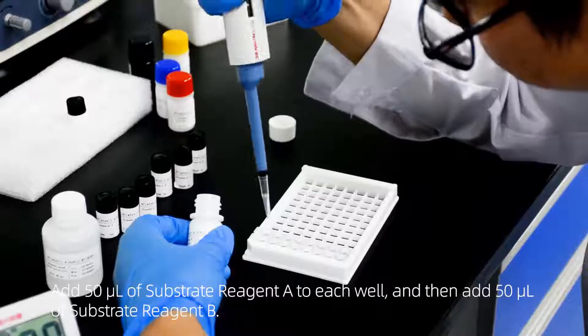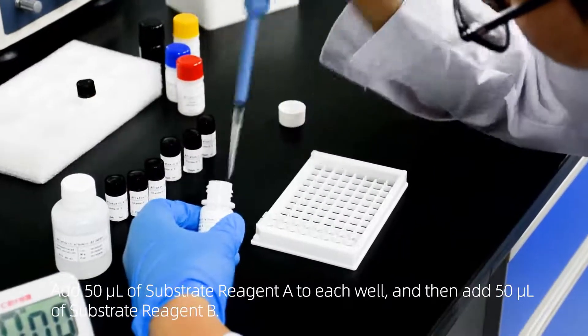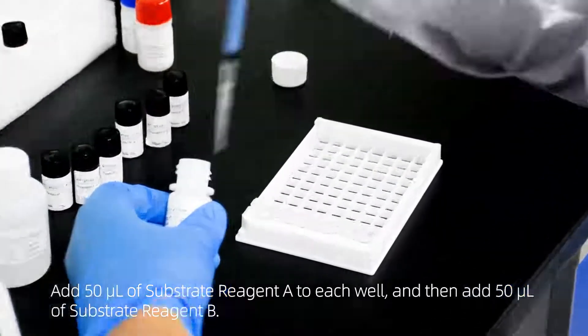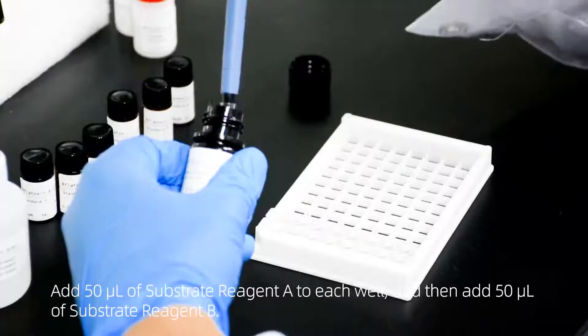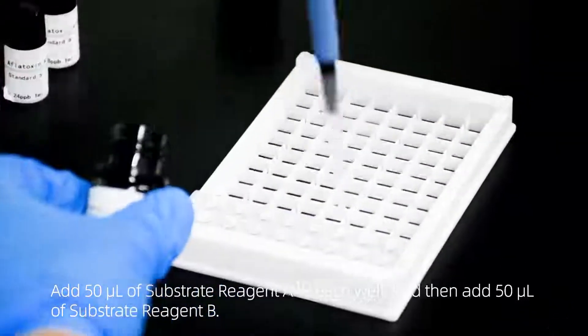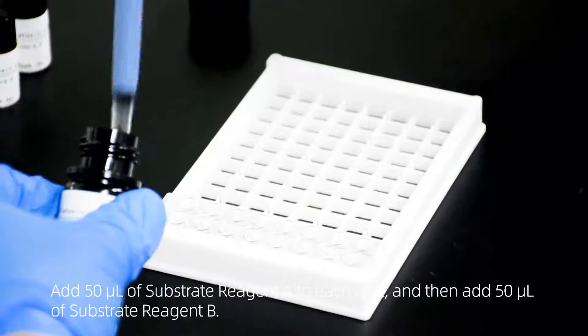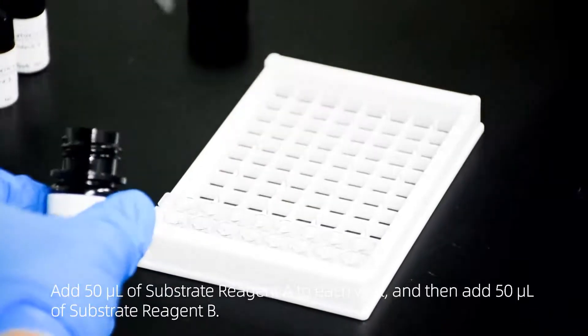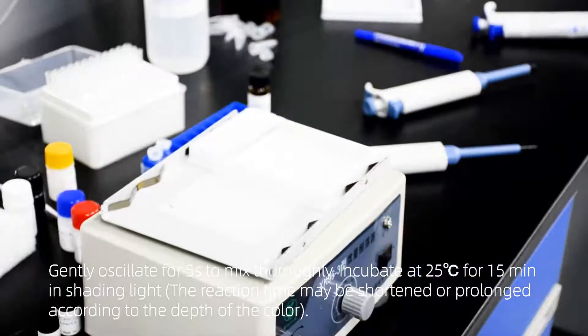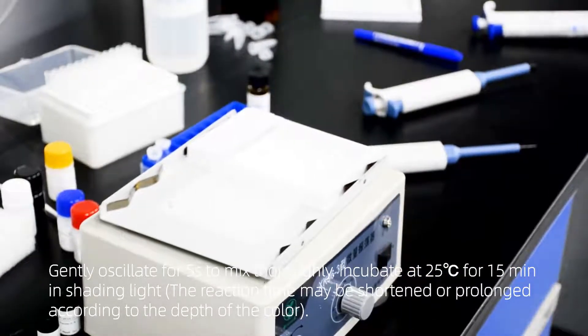Add 50 microliters of substrate reagent A to each well, then add 50 microliters of substrate reagent B. Gently oscillate for 5 seconds to mix thoroughly.